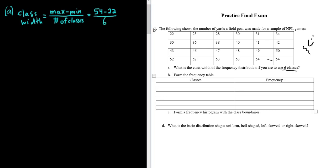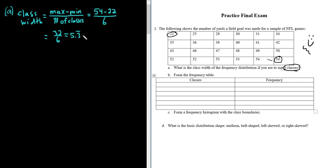So this is equal to 32 over 6, and if you put this in your calculator you'll get 5.3 repeating. It's the biggest number, 54, minus the smallest number, 22, divided by the number of classes. Here's the tricky part: you always have to round up. Round up to the same number of decimal places as the data.